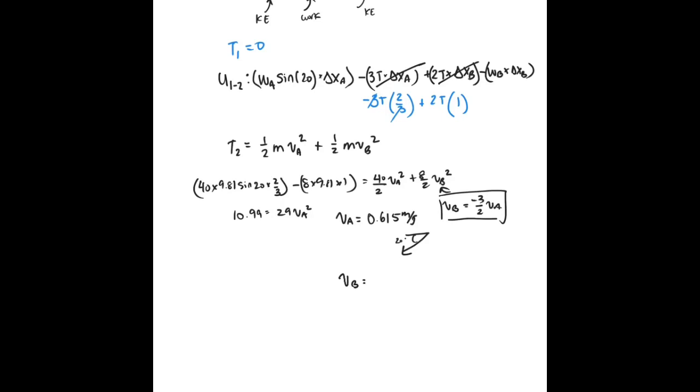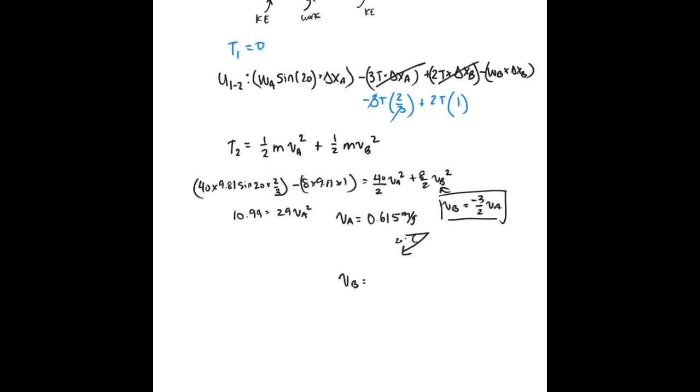And the velocity of A is equal to 0.615 meters per second down the slope. We also have VB is equal to negative 3 over 2 VA, which is equal to negative 0.92 meters per second. That means that VB is equal to 0.92 meters per second upwards. So now we've solved the problem using the principle of work and energy.